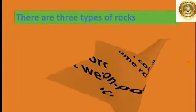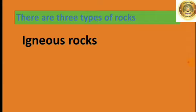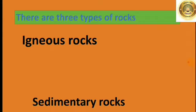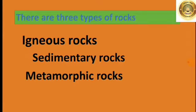So according to their formation process, there are three main types of rocks. First, igneous rock, which is also called the primary rock. Second, sedimentary rock. And third, metamorphic rock. Let's see them one by one.